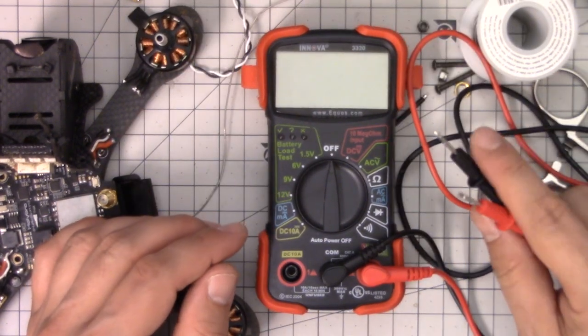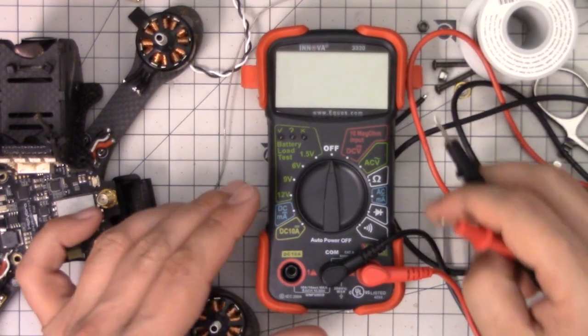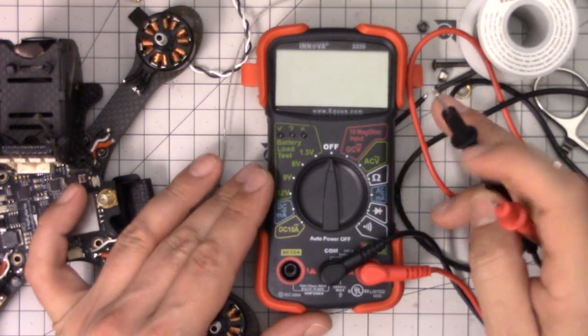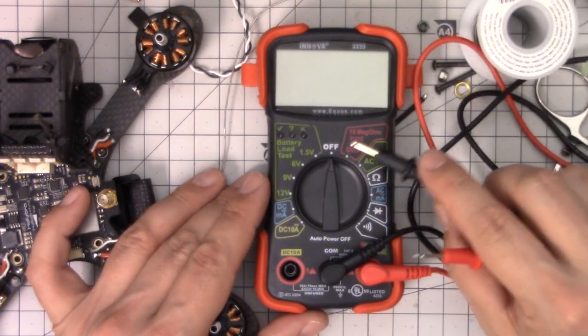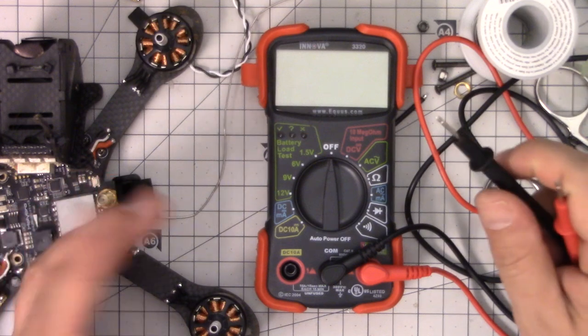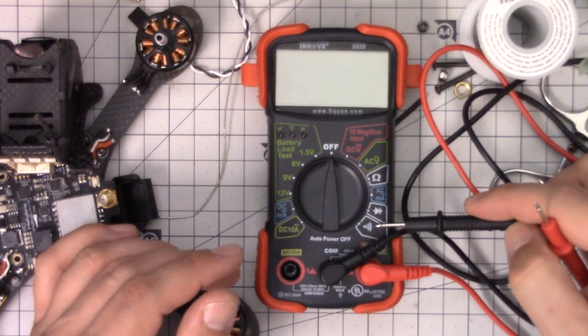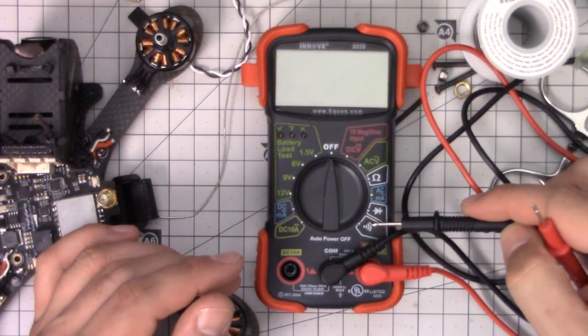The function we're going to look at today is the continuity function. You might think that when you start working with a multimeter, the first thing you would look at would be measuring volts—that's what you think of when a multimeter measures volts, right? But I have to say that the continuity function is probably the most commonly used function for me.